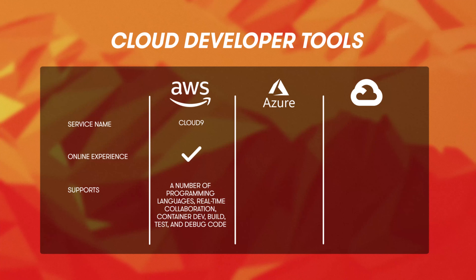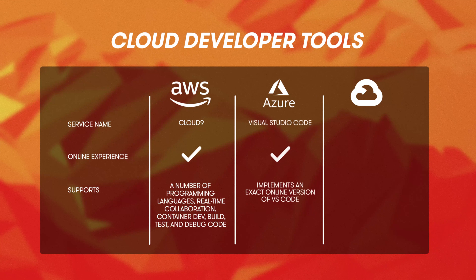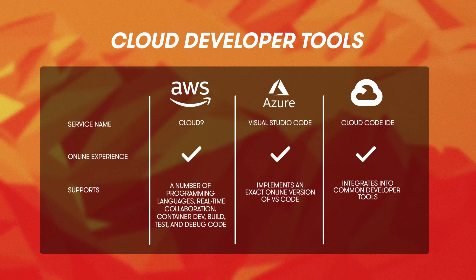And that brings us to Cloud DevTools — tools that live exclusively in the cloud which developers use to build things. AWS has Cloud9, a 100% online integrated development environment, or IDE, for creating applications using AWS resources. It supports a number of programming languages, allows collaboration in real time, supports container development, and you can build, test, and debug your code too. Azure has the Visual Studio Code Online experience, which implements an almost exact online version of the very popular VS Code. GCP has their Cloud Code IDE, which both allows you to write code online but also integrates into common developer tools.